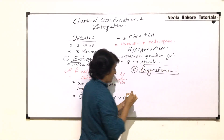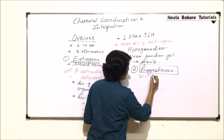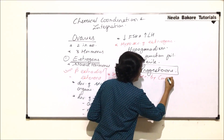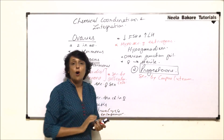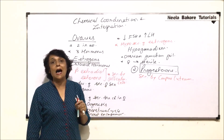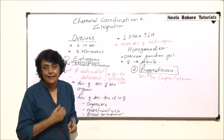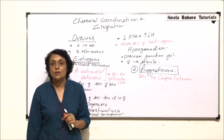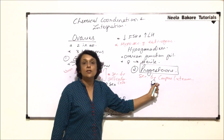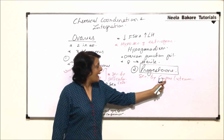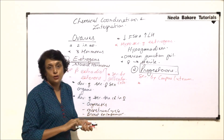Progesterone is again a very important hormone. Progesterone is secreted by the corpus luteum. Corpus luteum is formed from the Graafian follicle after ovulation. The Graafian follicle encloses the egg in its secondary oocyte stage, and after ovulation the remaining part of the Graafian follicle changes into corpus luteum, which produces progesterone.